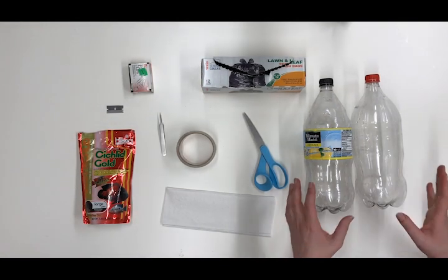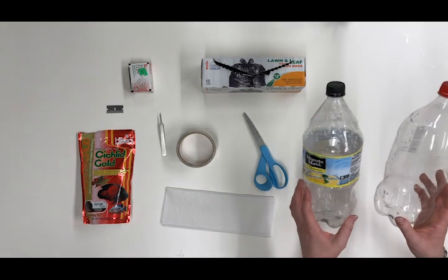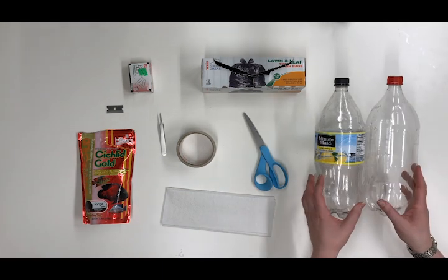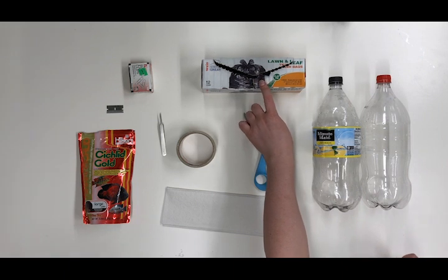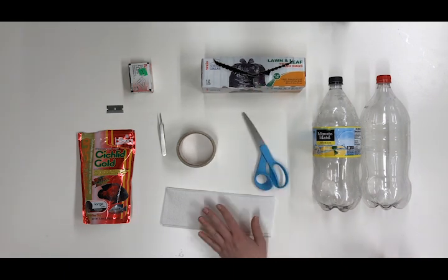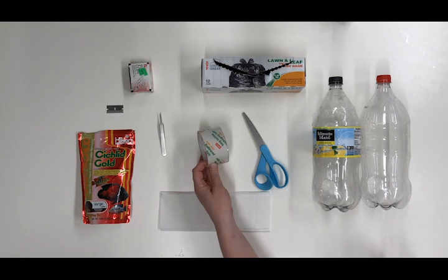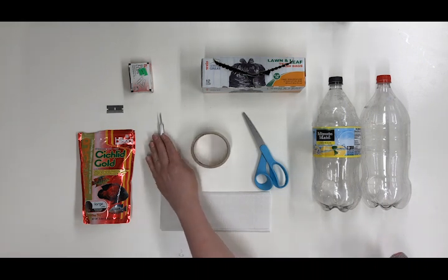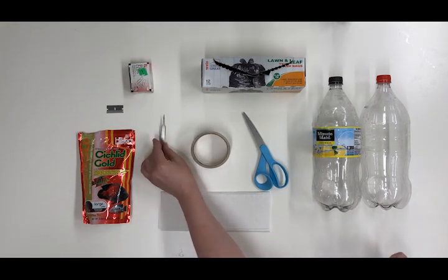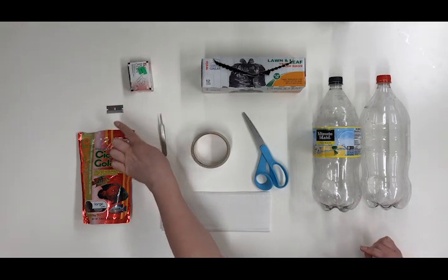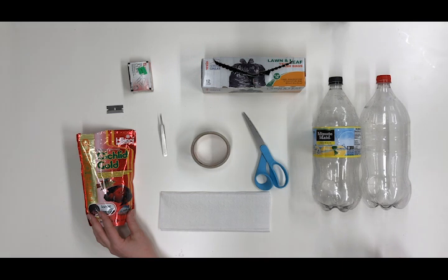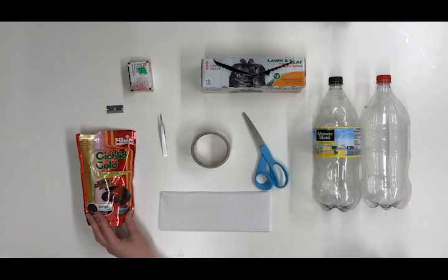First, let's gather your supplies. You will need two clear 2-liter soda bottles, one black trash bag, a pair of scissors, a few paper towels, a roll of clear packing tape, some tweezers, a handful of paper clips, a razor, and pet food. The pet food can be dog, cat, or fish food.